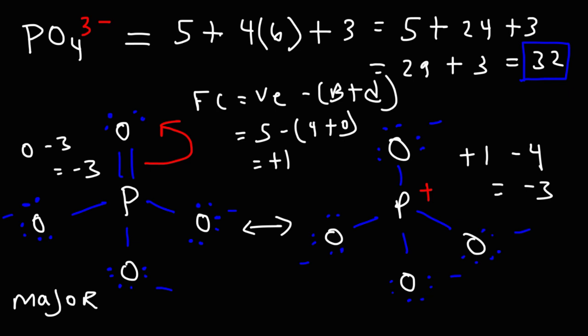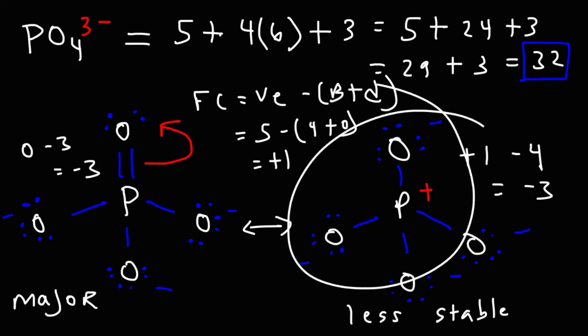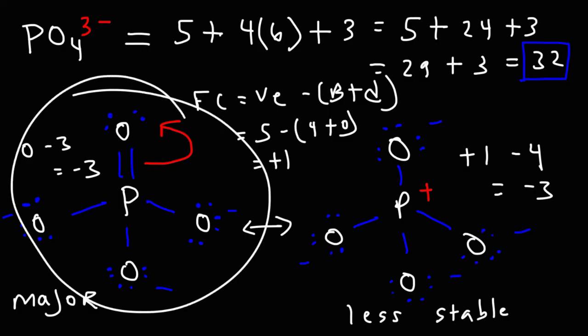Whenever you have a Lewis structure that has more separation of charges, that Lewis structure is less stable and more reactive. So this is still an acceptable Lewis structure of phosphate, but it's not in its most stable form. This right here is the best Lewis structure for phosphate. So that's going to be the answer for this video. That's how you can draw the Lewis structure for that polyatomic ion.